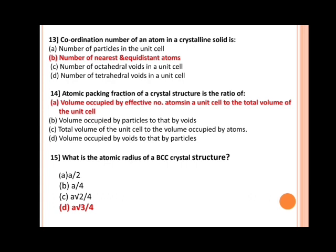Next, what is the atomic radius of a BCC crystal structure? Options are: a) a/2, b) a/4, c) a√2/4, d) a√3/4. The correct answer is d, a√3/4.